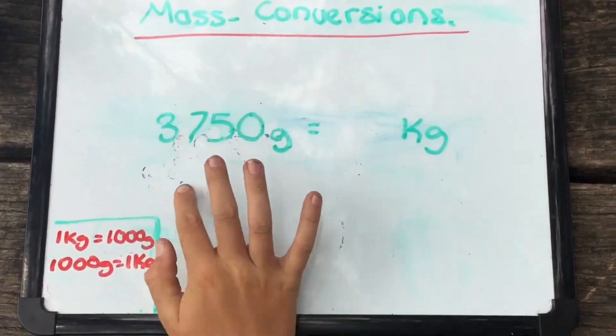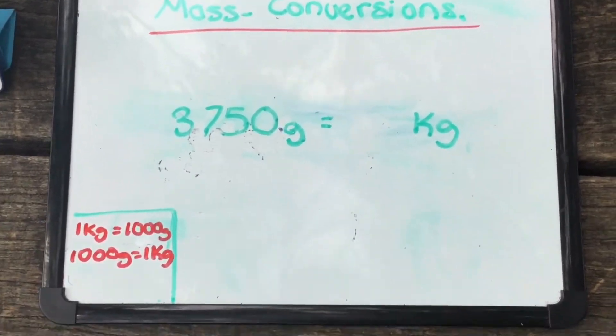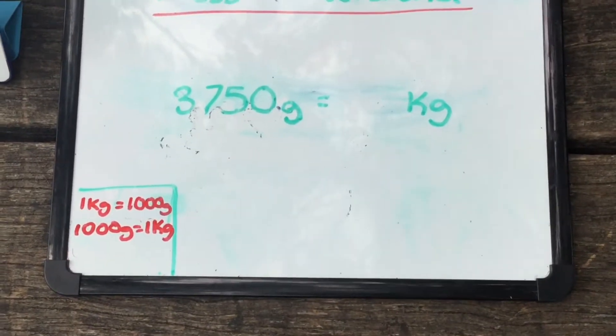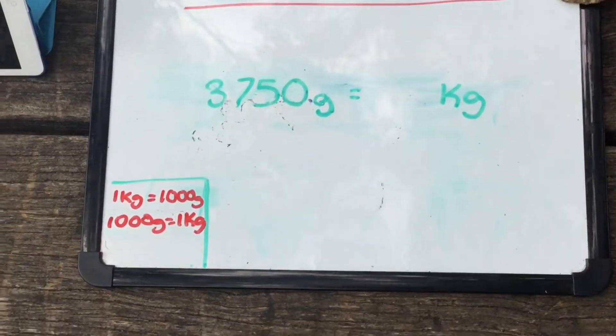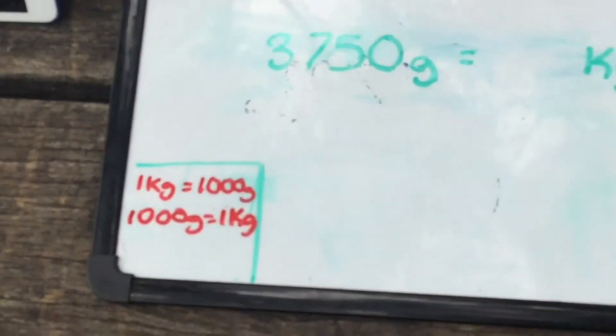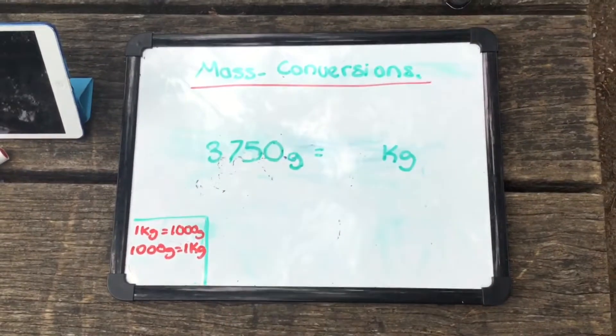So here we have 3,750 grams and we need to convert that into kilograms. Down here you can see that 1 kilogram is equal to 1000 grams, and 1000 grams is equal to 1 kilogram. We will be using this measurement at the bottom today. So we need to divide this number by 1000.